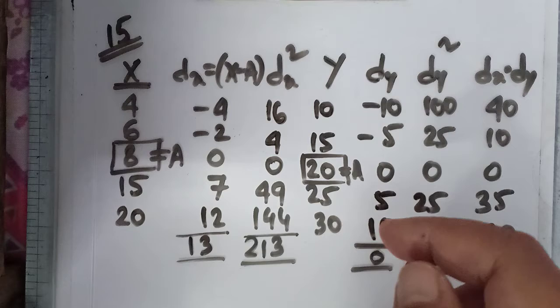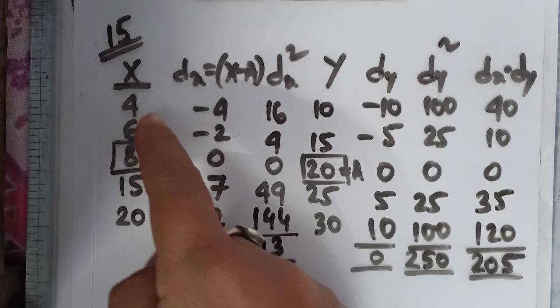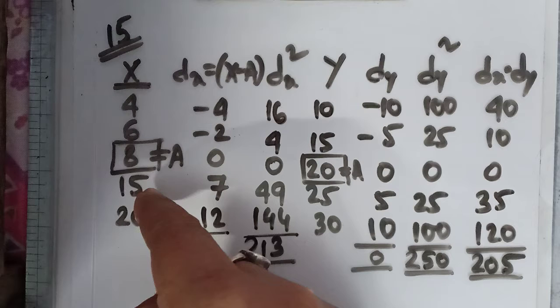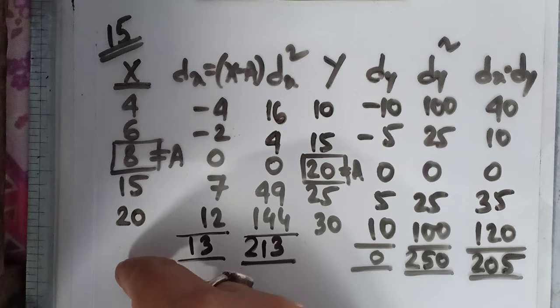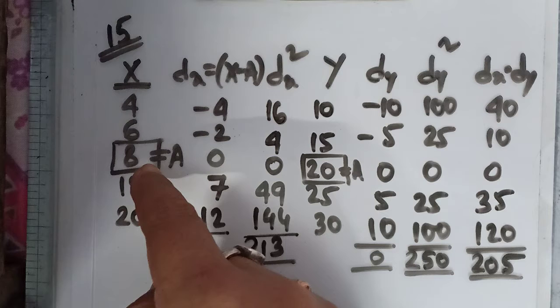Now, if you do the sum of x, you get 4 plus 6, 10, 18, 38, 48 and 53. If you find x̄ as 53 by 5, then it's not coming as an integer. 20, 35, 35 plus 8 is 43, 43 plus 10 is 53.